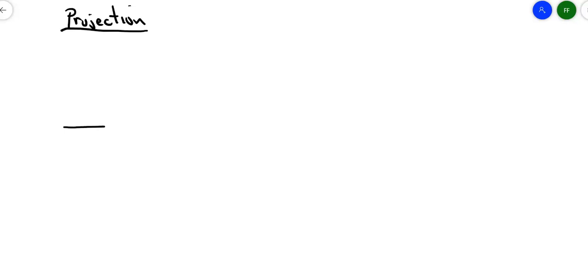Suppose I take two vectors. Here is vector v, and here is vector u. And what I would like to do is drop a perpendicular from u, from the arrow at the end of u, onto vector v.